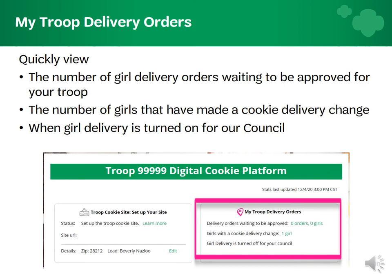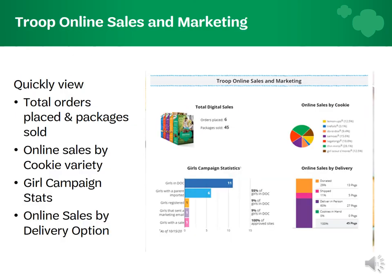Troop volunteers will now have a quick view of the number of girl delivery orders awaiting approval, the number of girls that have changed their delivery status, and when girl delivery is turned on for our council. You will also have views of the total online orders placed and the number of packages sold, online sales by variety, girl campaign stats, and online sales by delivery.